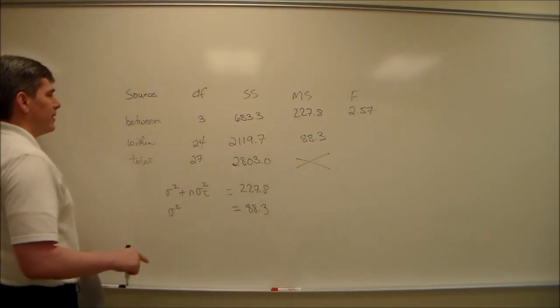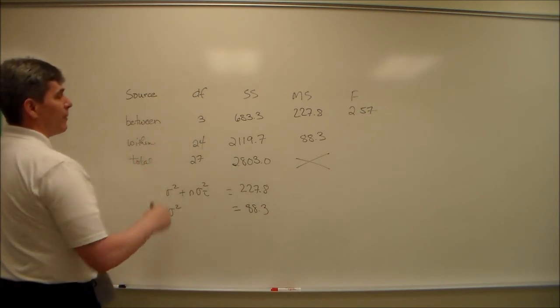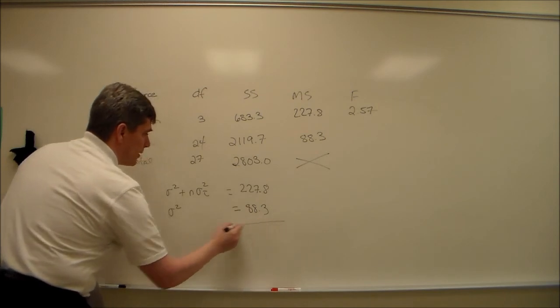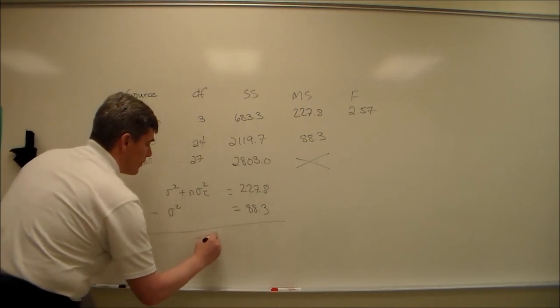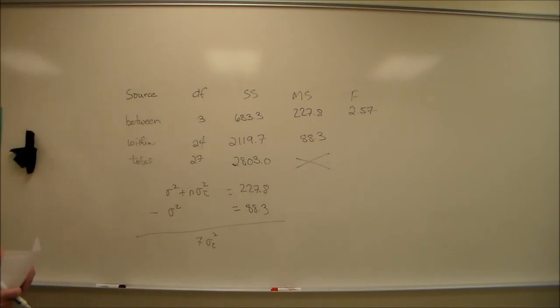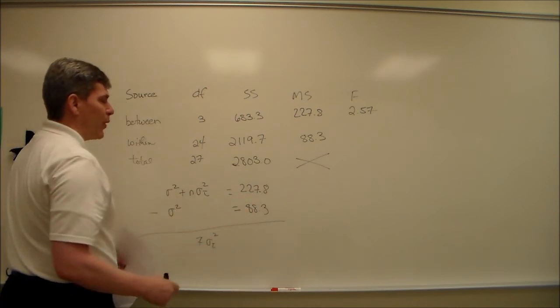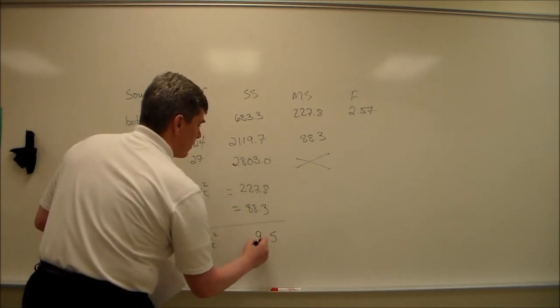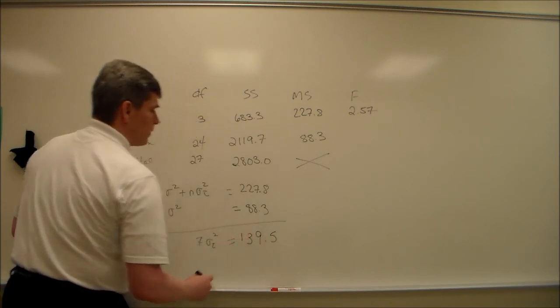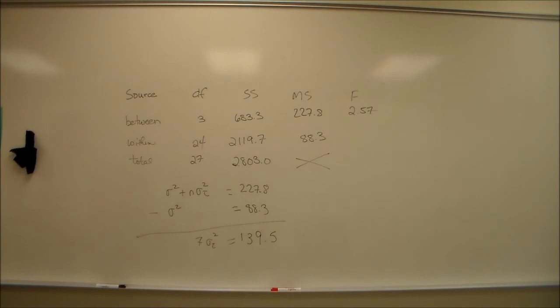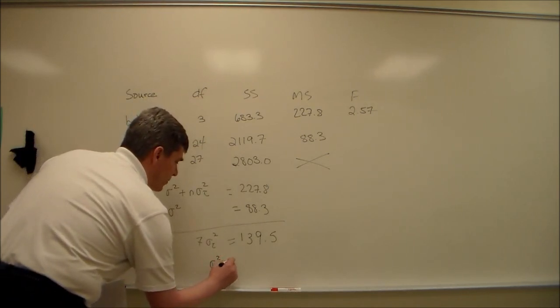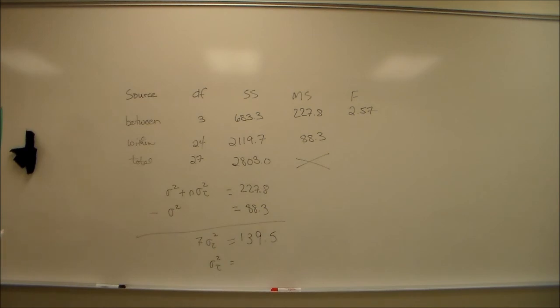n in this case is, let's see, there's 28 altogether, there's four groups, so n must be 7. So I'm going to subtract these two, come up with 7 sigma squared tau, because sigma squared plus n sigma squared tau minus sigma squared is 7 sigma squared tau. And then 227.8 minus 88.3. So 7 sigma squared tau is 139.5, which means that our estimate for sigma squared tau is going to be that 139.5 divided by 7, which is 19.9.